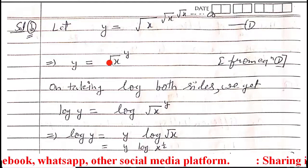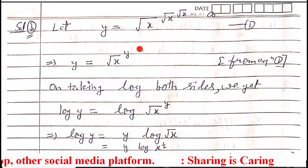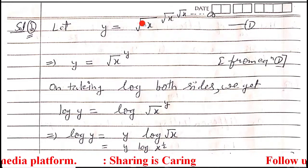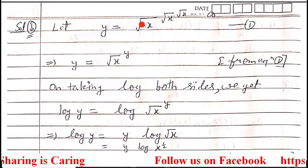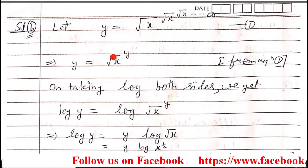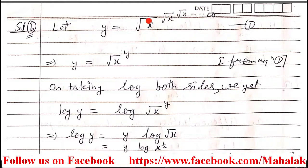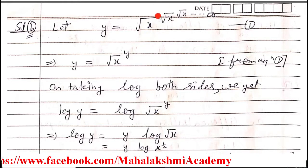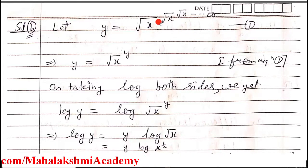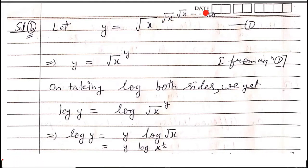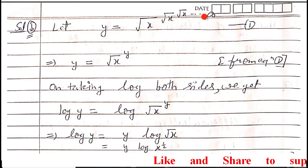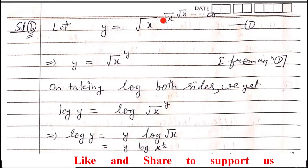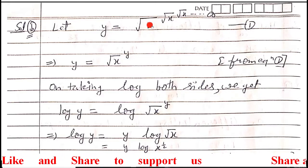Since the chain repeats to infinity, I assume the whole function as y (equation 1). Then y equals root x to the power y, because the remaining infinite chain after taking out one root x is again y. So from the infinite repetition, the part that remains is still y, and we write y = x^(y/2).